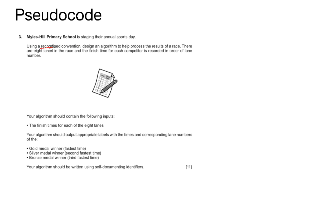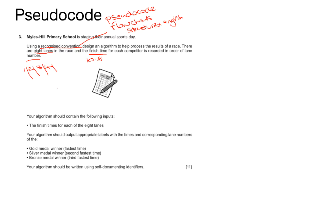Now let's look at this a bit more closely. What does it mean by a recognized convention? Simply, we mean pseudocode, we can mean flowcharts, or we can mean structured English. A recognized convention is any method of producing an algorithm. The next thing I noticed was the number of lanes required and the fact we need a race time for each lane. It also states that the algorithm should have appropriate labels, meaning when we output anything we should have some words with it to explain what we are outputting — for example, the lane numbers with the corresponding race times.